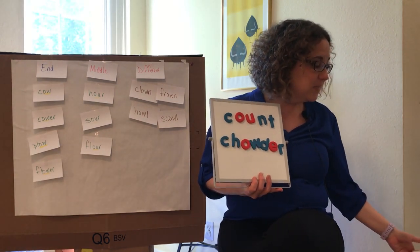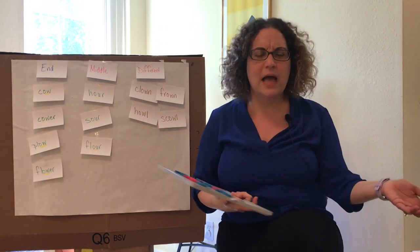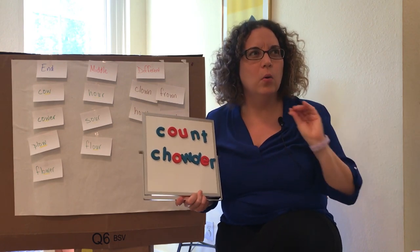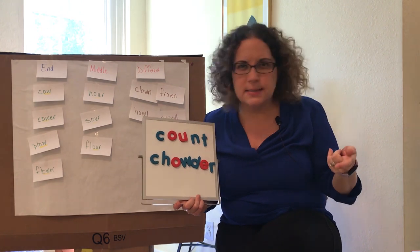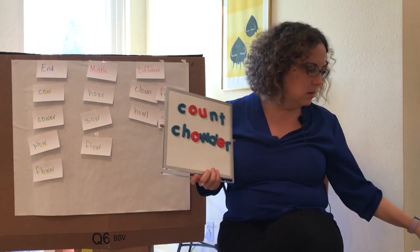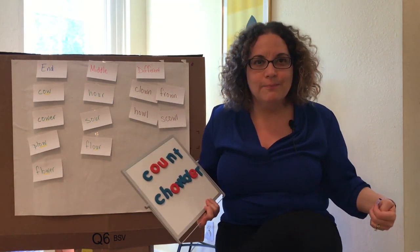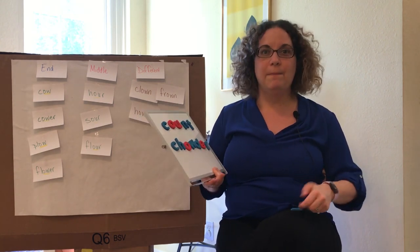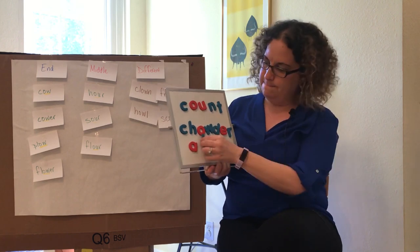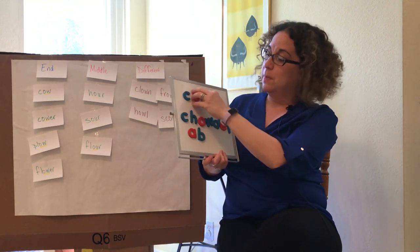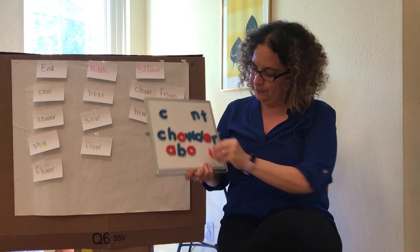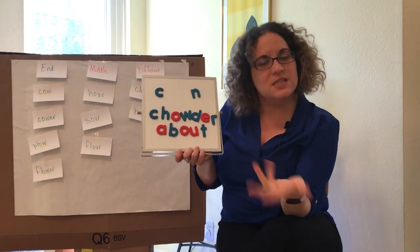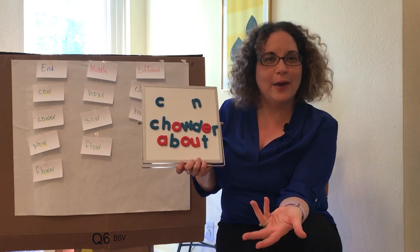Let's look at the word 'about' — one you probably use a lot in your writing. Where do you hear the ow in 'about'? It's not at the end; it's in the middle. So if it's in the middle, we use O-U. I'm going to build the word 'about.' Because our ow is in the middle, I went ahead and used the O-U pattern. About. Fun!